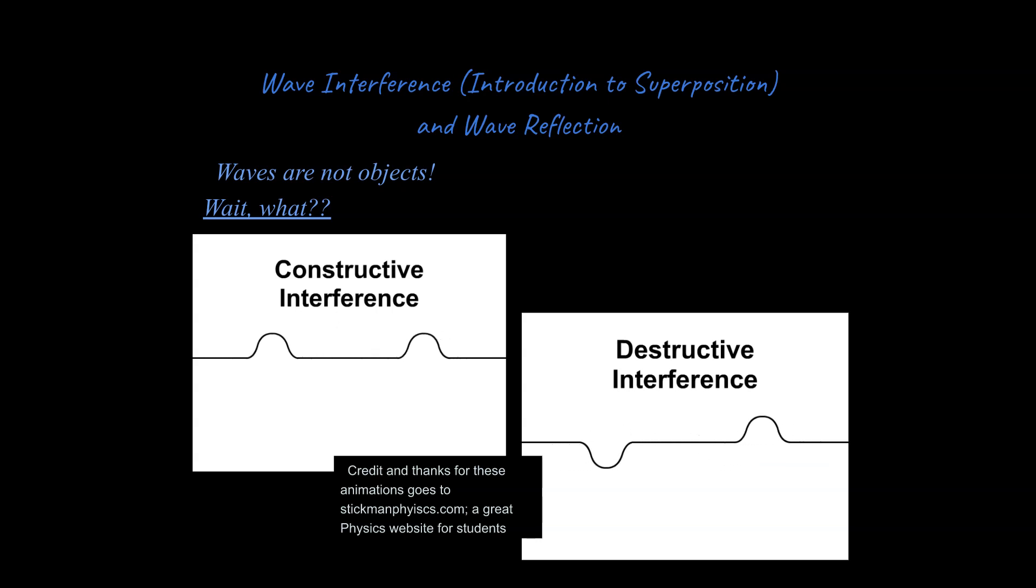So the first idea is called interference. You can have constructive or destructive interference depending on what side of the center axis. Take a look right here. This we'll call the center axis right here for this wave, right here for this wave. So if it's on the top side or the bottom side, if they're both on the same side of the center axis, both waves are on the same side of the center axis, they will constructively interfere.